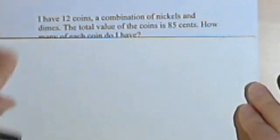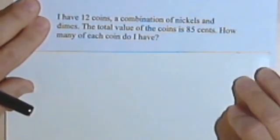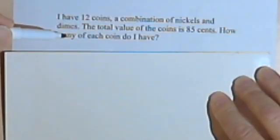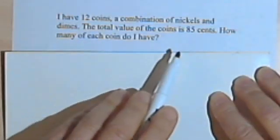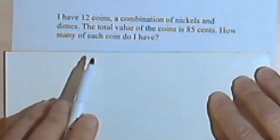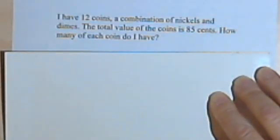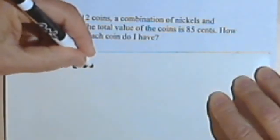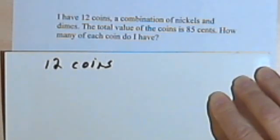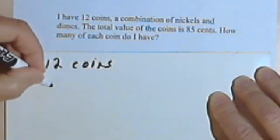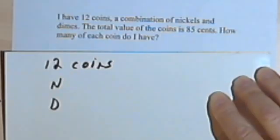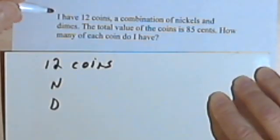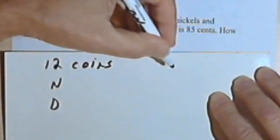I've got this problem here. I have 12 coins, a combination of nickels and dimes. The total value of the coins is 85 cents. How many of each coin do I have? So let's write down what I've got. There are 12 coins, and they're nickels and dimes, so I'm just going to put an N and a D. And the total value is 85 cents.